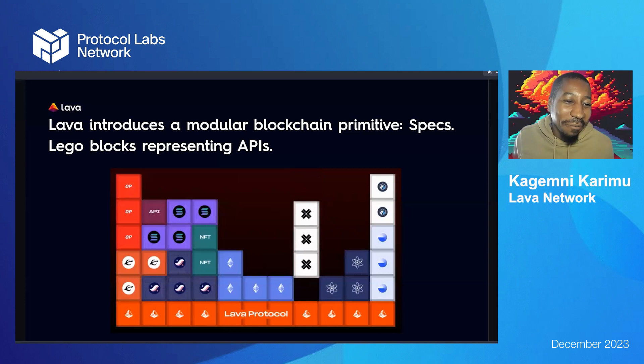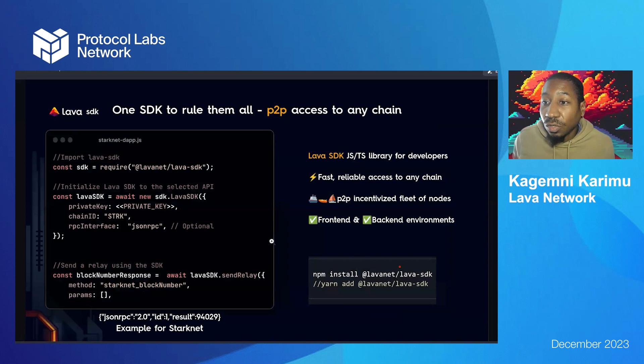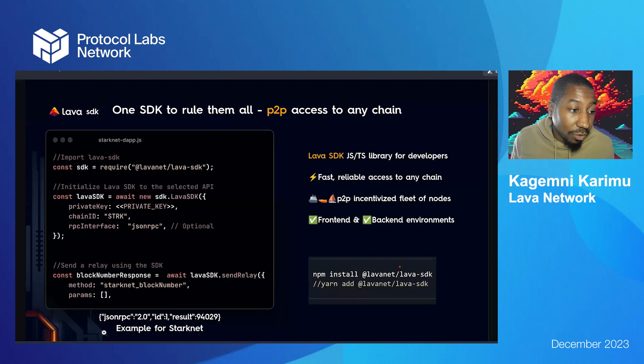This modularity is one of the core ideas — basically taking these building blocks, represented here using a Tetris graphic. These building blocks get added on to Lava, which means from the gateway, the SDK, or the server kit, you can actually see these different chains and supported APIs and make calls to them. With the SDK in particular, you can do it in a decentralized peer-to-peer way, so you can initialize multiple chains with very simple calls and make calls independent of the way that chain is communicating.